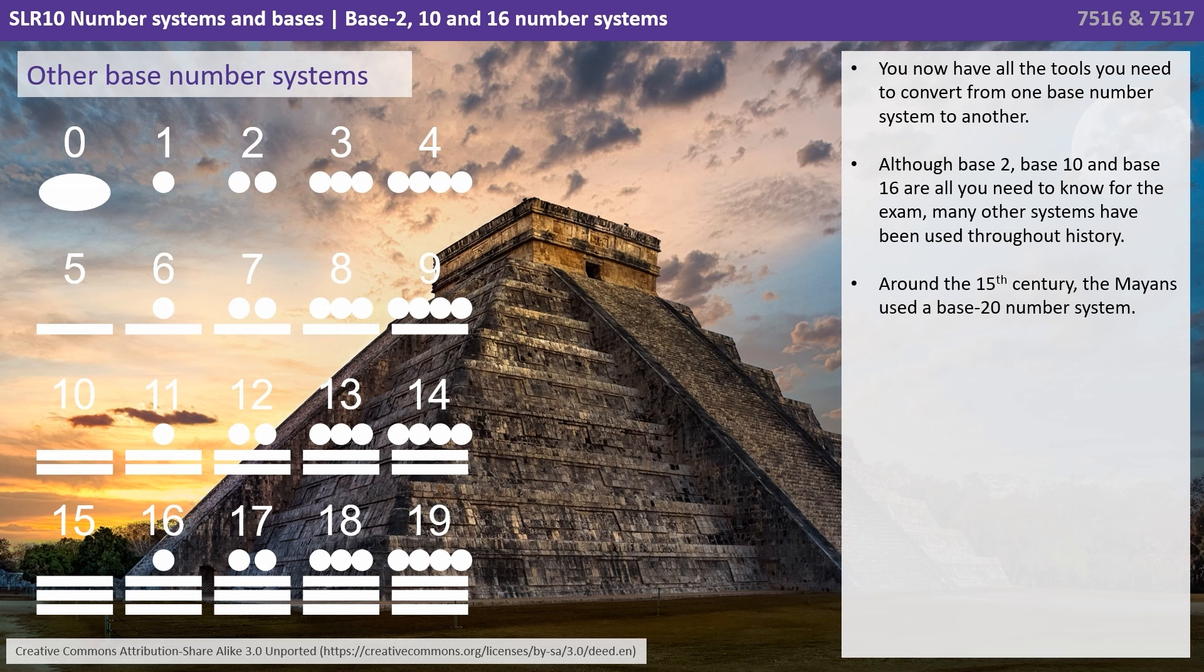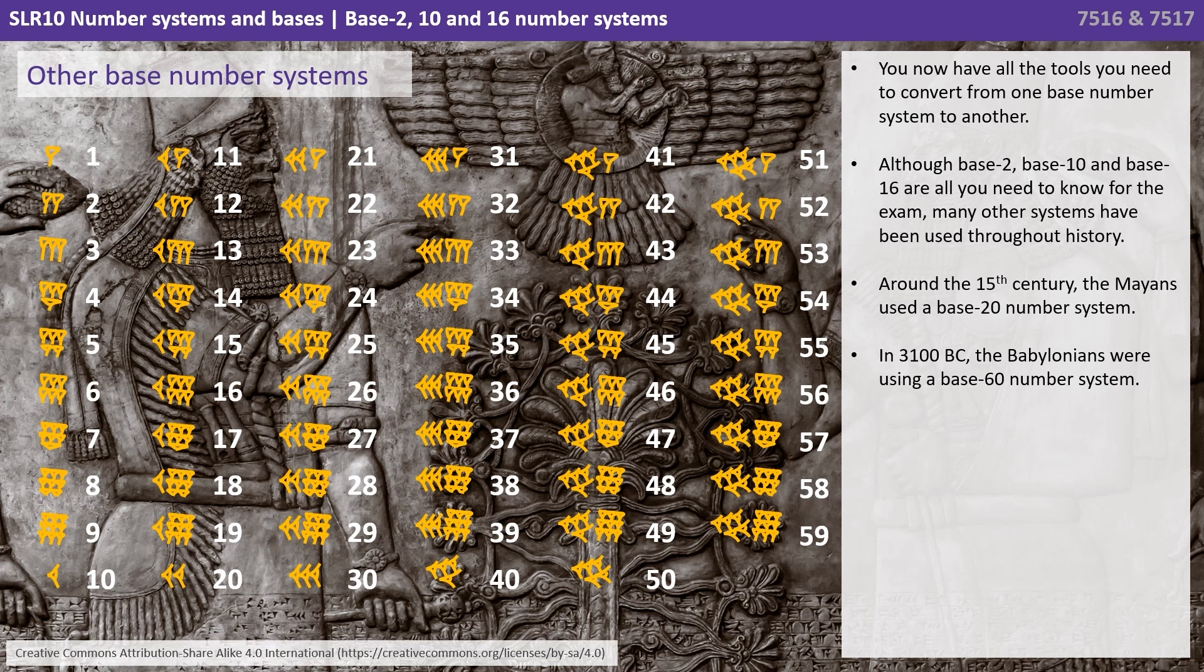Although base 2, 10 and 16 are all you need to know for the exam, many other systems have been used throughout history. Around the 15th century the Mayans used a base 20 number system which is being shown here. In 3100 BC the Babylonians were using a base 60 number system. The process however is exactly the same as everything else we've shown you in the video so far.